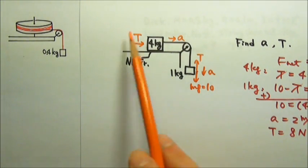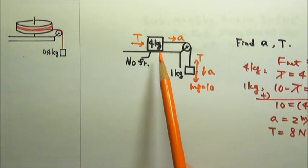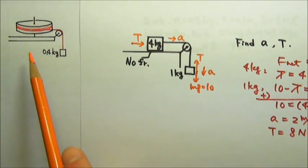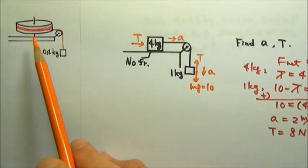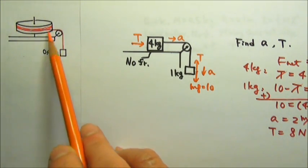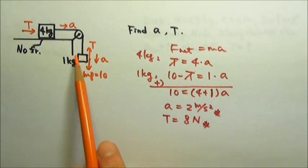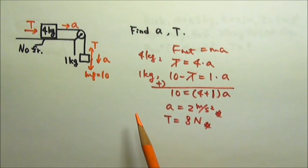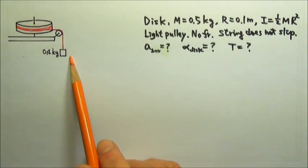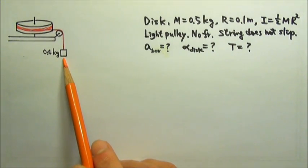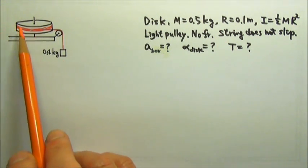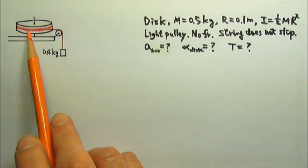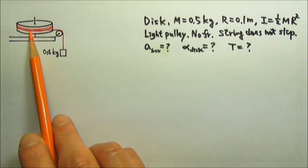This problem is very similar to that one. In the old problem, we had both boxes doing translational motion. But in this one, we have one box doing translational motion and the disc doing rotational motion. For the box doing translational motion, we write net force equals mA. But for the disc that does rotational motion, we will write net torque equals I·alpha.